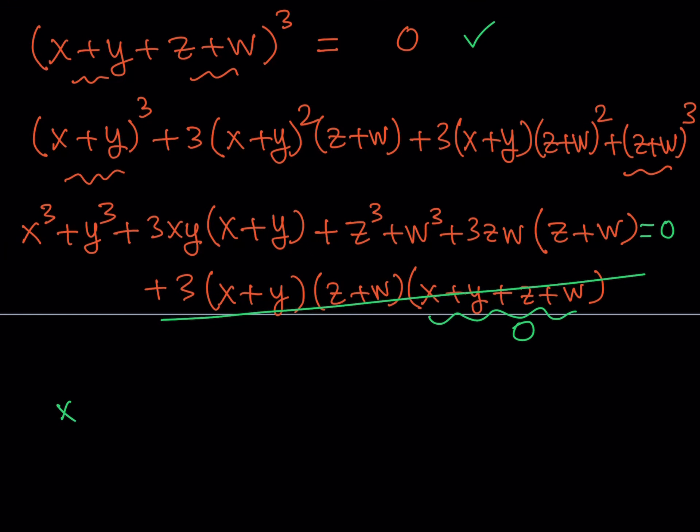If you put it all together, it's going to look like x cubed plus y cubed plus z cubed plus w cubed. So I'm taking the cubes first. And then the two terms: 3xy times x plus y plus 3zw times z plus w.